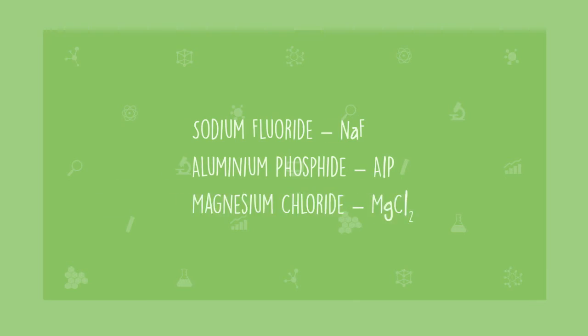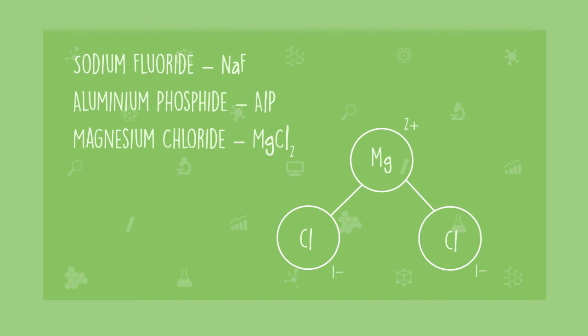You'll notice that although the word binary means two, binary ionic compounds can have more than two ions. For example, magnesium chloride contains three ions: one magnesium cation with a charge of plus two, and two chlorine anions with a charge of minus one. But there are only two elements present in the compound, magnesium and chlorine. That's why we call it a binary compound.